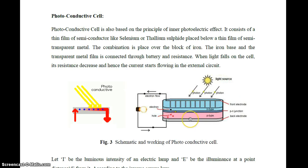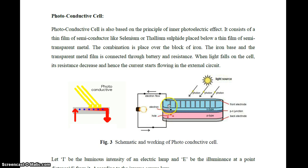The photoconductive cell is based on the principle of the inner photoelectric effect. It consists of a thin film of semiconductor like selenium or thallium sulfide, placed between thin films of semi-transparent material, with P-type material, N-type material, front electrode, and back electrode. When sunlight passes as photons, electron-hole pair recombination takes place and a small current flows. When light falls on the cell, its resistance decreases, current starts flowing through the external circuit — current increases as resistance decreases.